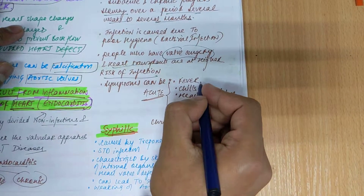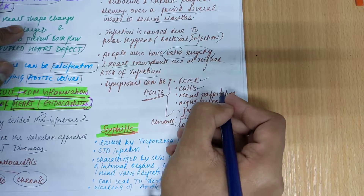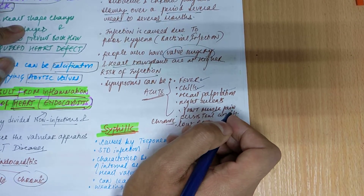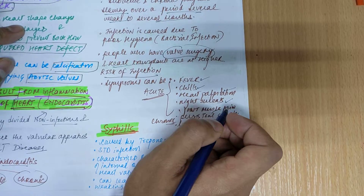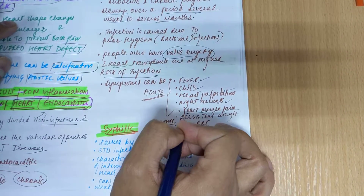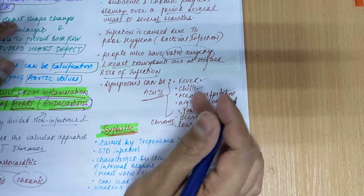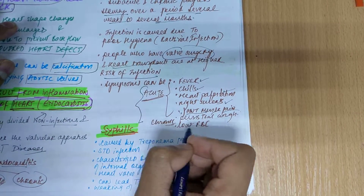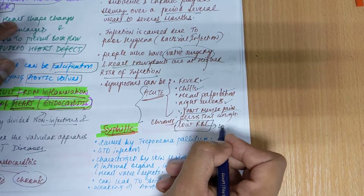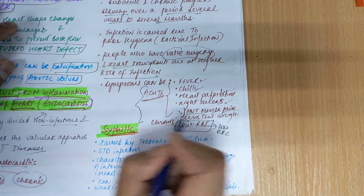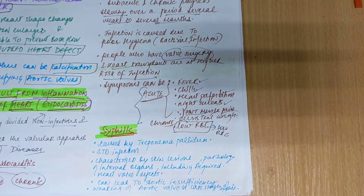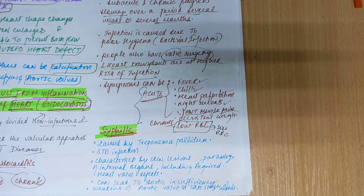Symptoms of endocarditis include fever, chills, heart palpitations, night sweats, joint and muscle pain, and persistent cough. These can be seen in both acute and chronic forms. In chronic endocarditis, a blood test will show a decreased level of red blood cells.